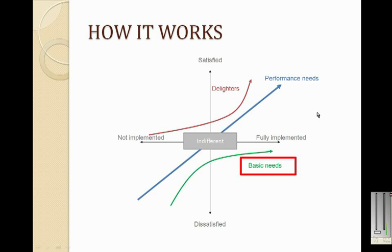The green curve represents the basic features which are supposed to be in the end product. Adding these features into the product doesn't improve the level of satisfaction from the user. However, if you don't include these features in the end product, it will make the end user really dissatisfied with the result.